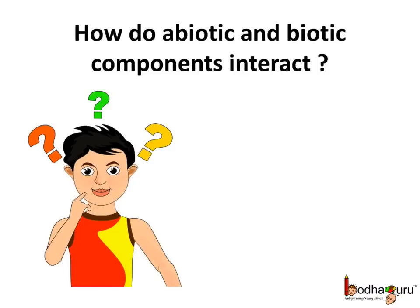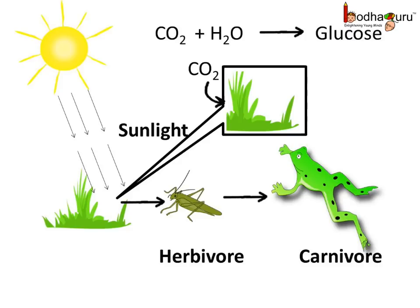Now that you know the biotic and abiotic components of the environment, let us see how they interact. Let us start with food. The plants make food using carbon dioxide, water, and sunlight during the photosynthesis process. The plant is a biotic component that uses the abiotic components like water, air, and sunlight for making its food.